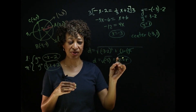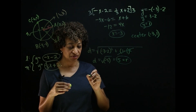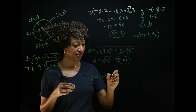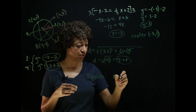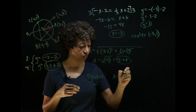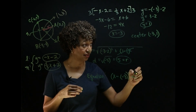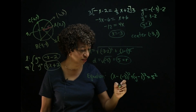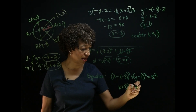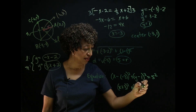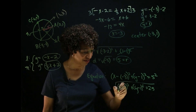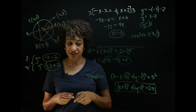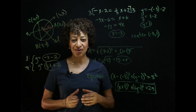I have the center and the radius, so I can write the equation of the circle. Plugging into x minus h squared plus y minus k squared equals r squared, and simplifying, we get x plus three squared plus y minus one squared equals 25. That is the equation of the circle. I hope this helped you — if it did, please press like, leave a comment, and I'll see you next time.